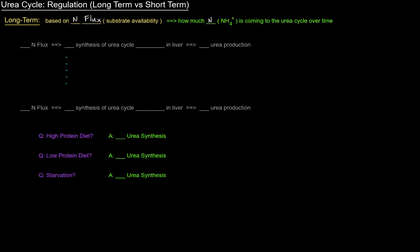So long-term, the activity of the urea cycle is going to be based on how much nitrogen is actually going to be processed. If there's an increase in nitrogen flux, what's going to happen is there's going to be an increase in the synthesis of urea cycle enzymes in the liver. And that will increase urea production.